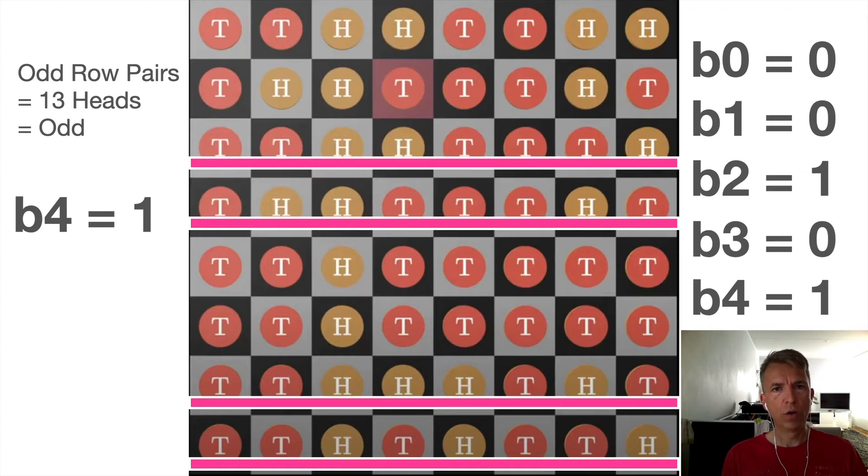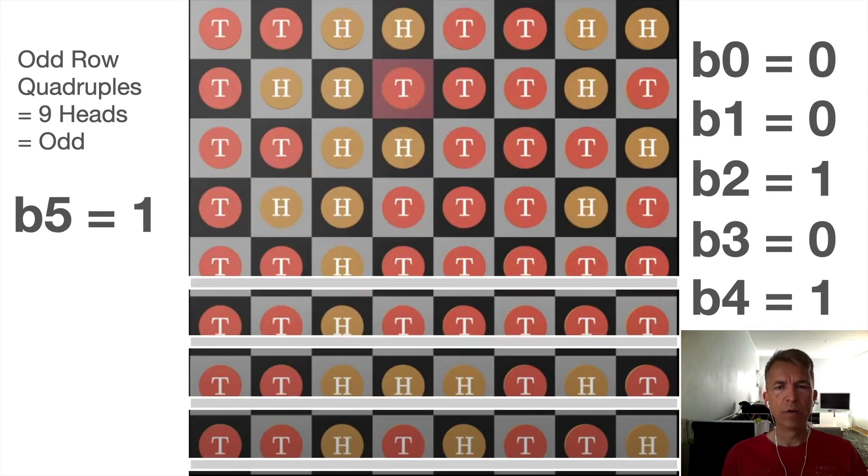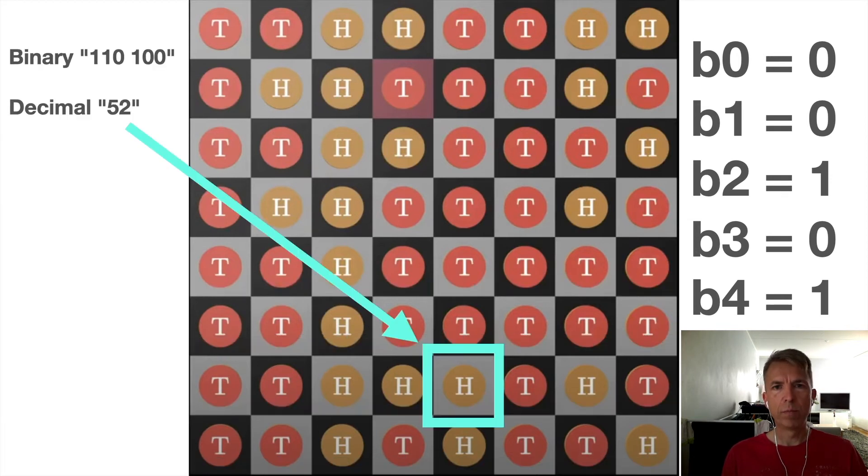We count the number of heads in the odd row pairs. This is 13 heads. We get it odd. So bit number four is one. And we count the number of heads in the odd row quadruples. We get nine heads. This is odd. So bit number five is one. So now we have the binary number one one zero one zero zero which is decimal 52.